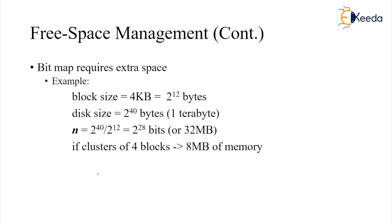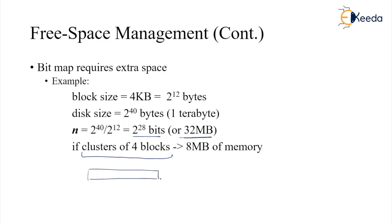So n equals 2^28 bits, or 32 MB for the bitmap. If there is a cluster of four blocks — grouping blocks together rather than maintaining information for each individual block — then for every four blocks we have one cluster entry, and only 8 MB of memory is required.